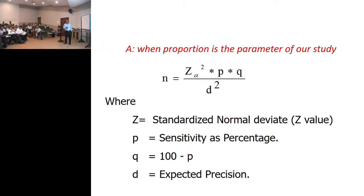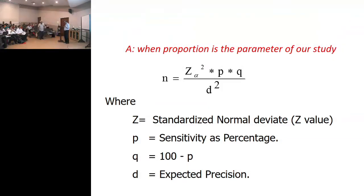Here is a simple formula: this is your sensitivity, and the complement of the sensitivity is 1 minus sensitivity. If sensitivity is 80%, then the complement is 20% — that is 100 minus 80.